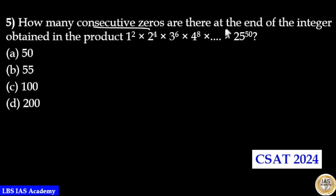How many consecutive zeros are there at the end of the integer obtained in the given product? The number of zeros at the end of the product depends on the number of tens. Here 2 and 5 are prime numbers, 2 into 5 gives you 10. So the number of tens depends on the number of 2's and number of 5's in it.